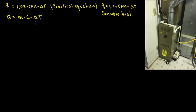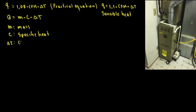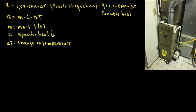So that's the sensible heat equation — let's define each variable. M is mass, C is specific heat, and delta T is change in temperature. The units are: mass in pounds, specific heat in BTUs per pound per Fahrenheit, and change in temperature in Fahrenheit.